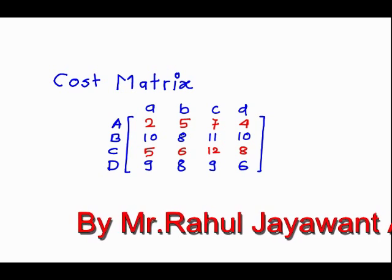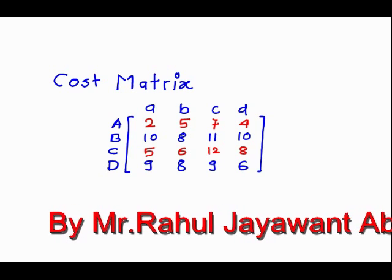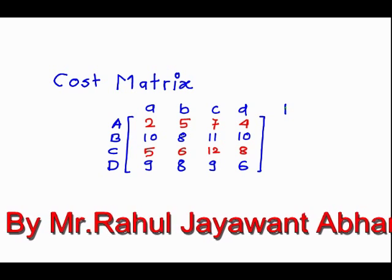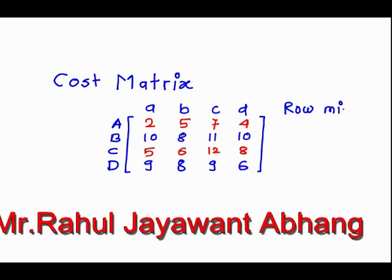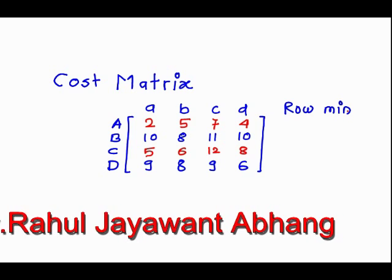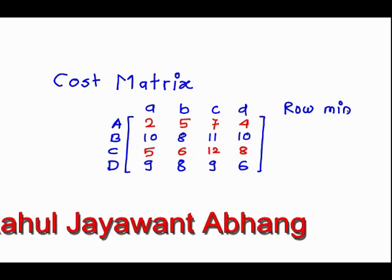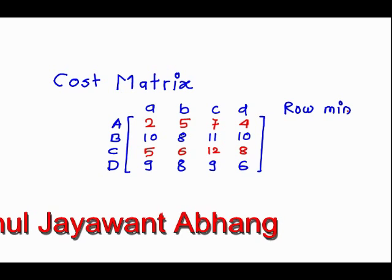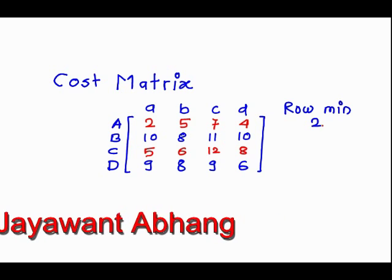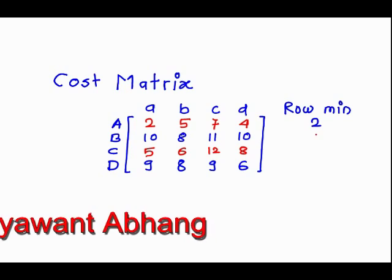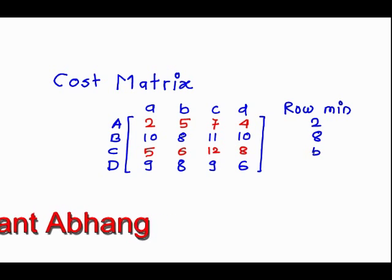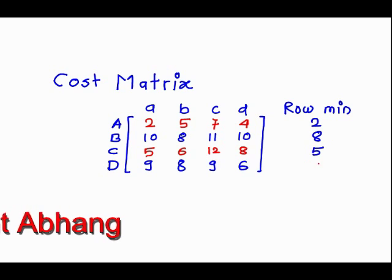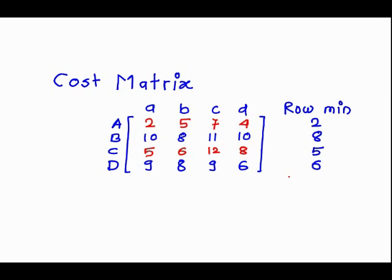The first step is to find the row minimum of each row. In the first row — 2, 5, 7, 4 — the minimum is 2. In the second row, the minimum is 8. In the third row, the minimum is 5. In the last row, the minimum is 6.